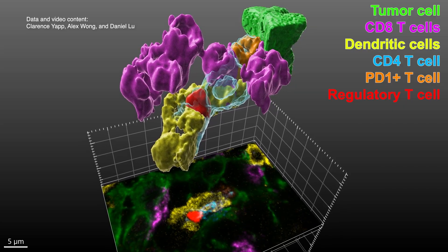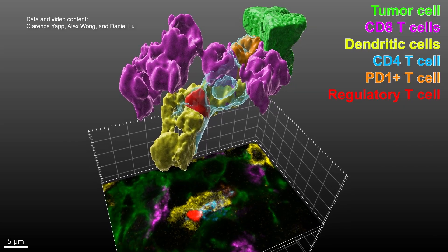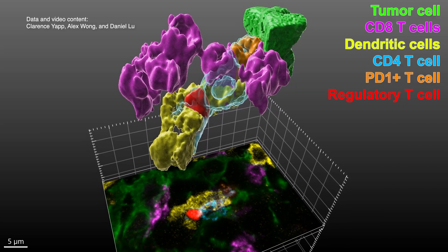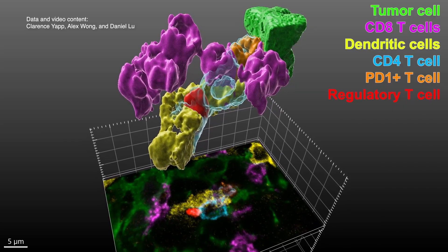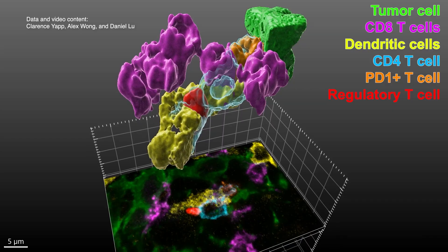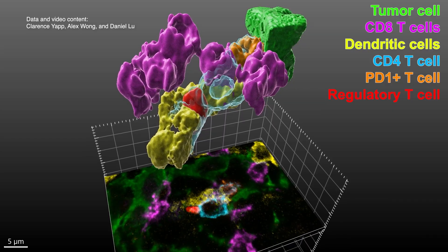But because the technique was done with 2D imaging, it produced flat, incomplete images of cells and was prone to errors.